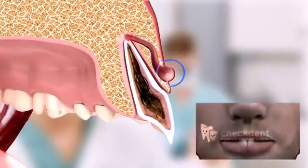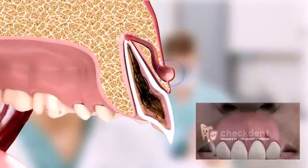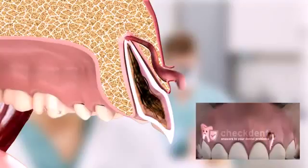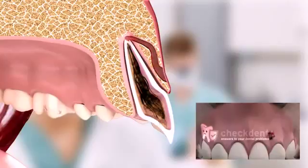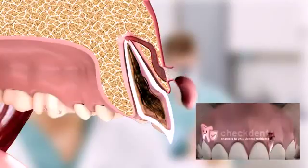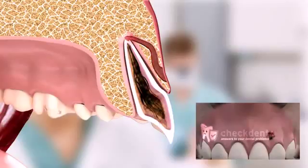A dental fistula is usually felt as a small elevation on the gums. When this elevation ruptures, pus empties out into the oral cavity and the elevation disappears, only to quickly fill up again. This process repeats itself, occasionally resulting in scarring of the existing pus canal. The walls around the pus canal get coated with special cells, following which the body isolates it. This eventually results in a fistula.